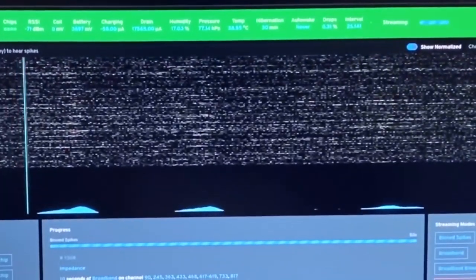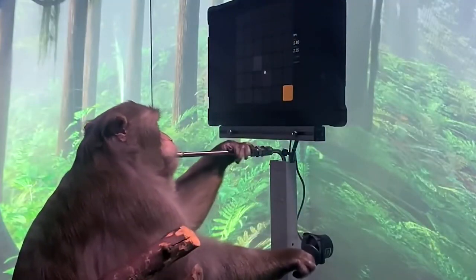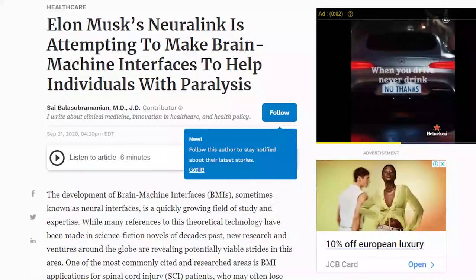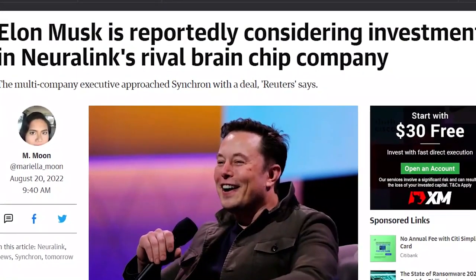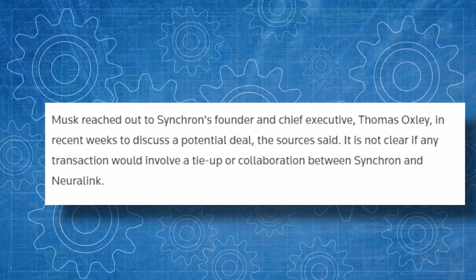Originally, it was expected to start human trials in 2020, but it was delayed to 2022. On July 29th, 2021, Neuralink declared that it secured a $205 million Series C fundraising round from investors, including Google Ventures.